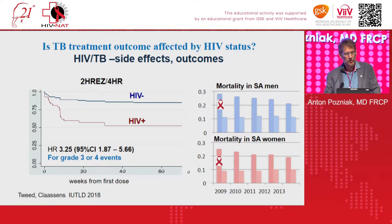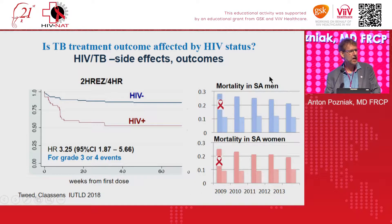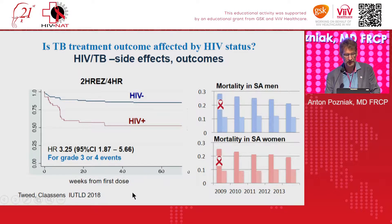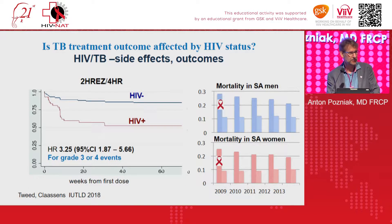Is TB treatment affected by HIV status? The tall columns represent HIV-positive patients and the shorter columns HIV-negatives. There is clearly higher mortality in HIV-TB co-infection than TB alone. Many of these patients present with end-stage HIV disease. HIV-positive patients also have more grade 3 or 4 adverse events, from recent IUTLD data. So not only do you get more side effects, but the death rate is higher.